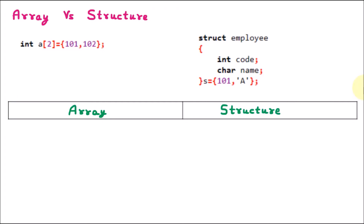Now we are learning the difference between array and structure. If we talk about the array, first we provide the data type which is integer, then the name of the array which is 'a', and its size. So here the size is 2. In memory we declare size 2, meaning two blocks are reserved. The name of the array is 'a', and we are using the int data type.